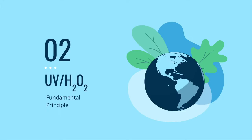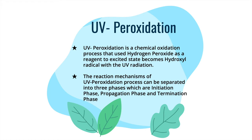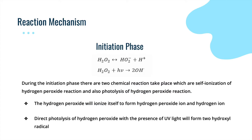My name is Lim Jazen. Today I would like to explain the fundamental principle of UV peroxidation. UV peroxidation is basically a chemical oxidation process that uses hydrogen peroxide as a reagent, which is excited to become hydroxyl radicals with UV radiation. The reaction mechanism of UV peroxidation can be separated into three phases: the initiation phase, the propagation phase, and the termination phase. For the initiation phase, two chemical reactions take place: the self-ionization of hydrogen peroxide and the photolysis of hydrogen peroxide.